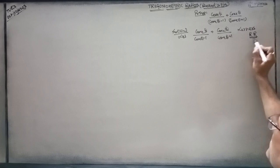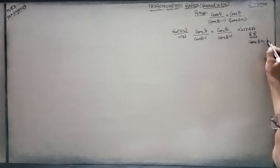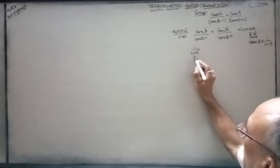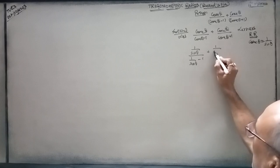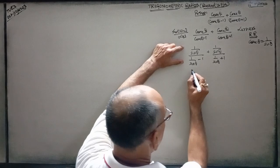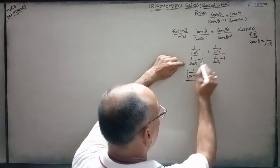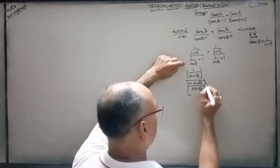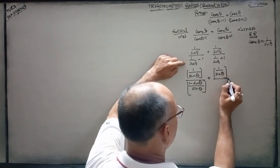Now in place of cosec theta, we will keep one upon sine theta. So now one upon sine theta over one upon sine theta minus one, plus again one upon sine theta and one upon sine theta plus one. It will be one upon sine theta over sine theta.